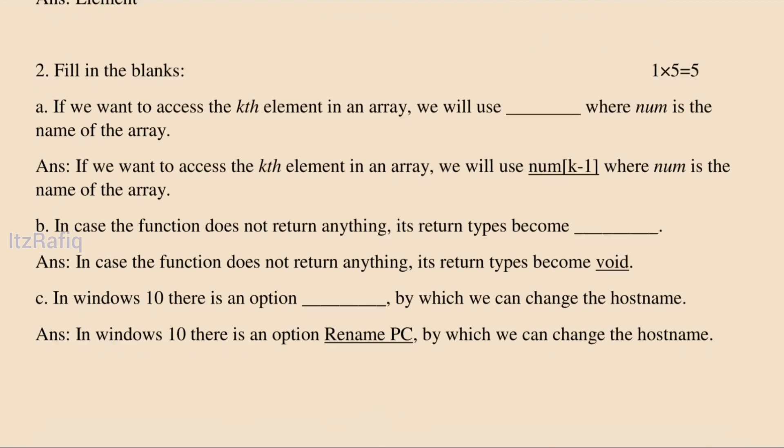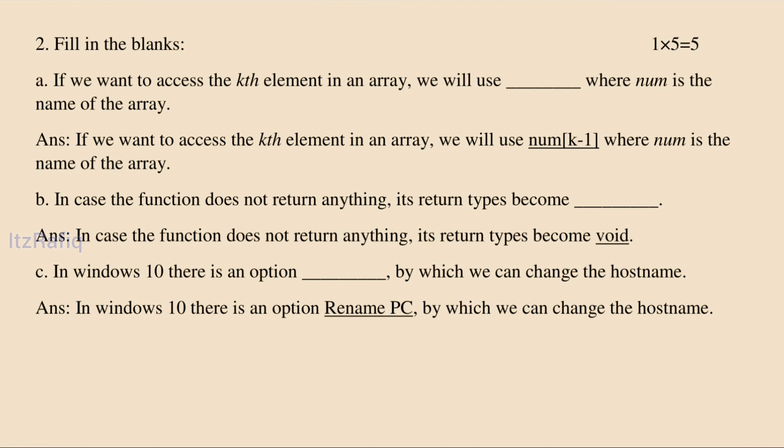Number two, fill in the blanks. If we want to access the kth element in an array, we will use num[k-1], where num is the name of the array. When we want to access elements of an array, the index is always the element number minus one. So to access the kth element it will be num[k-1]. When a function does not return anything, it is said to be void.